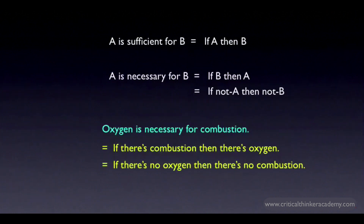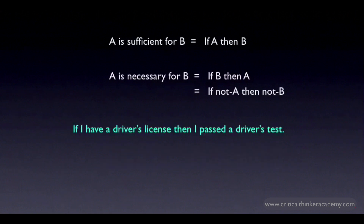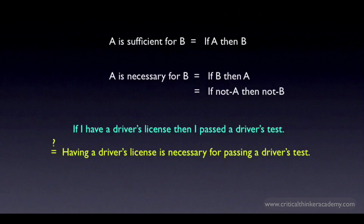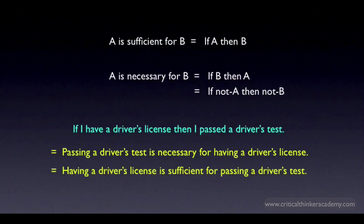Let's do an example working the other way. We're given the conditional: if I have a driver's license, then I passed a driver's test. How do we write this in terms of necessary and sufficient conditions? Consider: having a driver's license is necessary for passing a driver's test. No, it doesn't work — it would be very odd to say this, since it implies you already have to have a driver's license in order to pass a driver's test. We need to switch these around: passing a driver's test is necessary for having a driver's license. Using the language of sufficiency, you'll reverse these: having a driver's license is sufficient for passing a driver's test. The logic is right — if you know that someone has a driver's license, that's sufficient to guarantee that at some point they passed a driver's test.